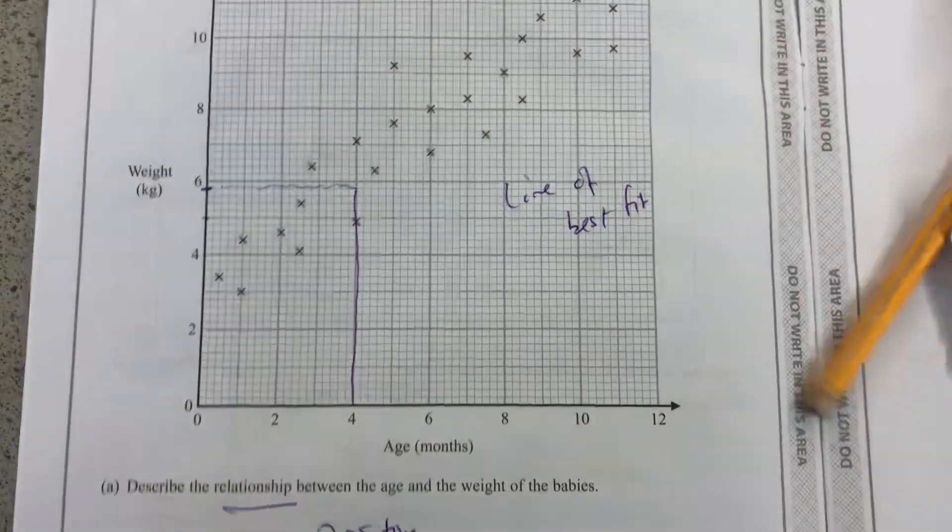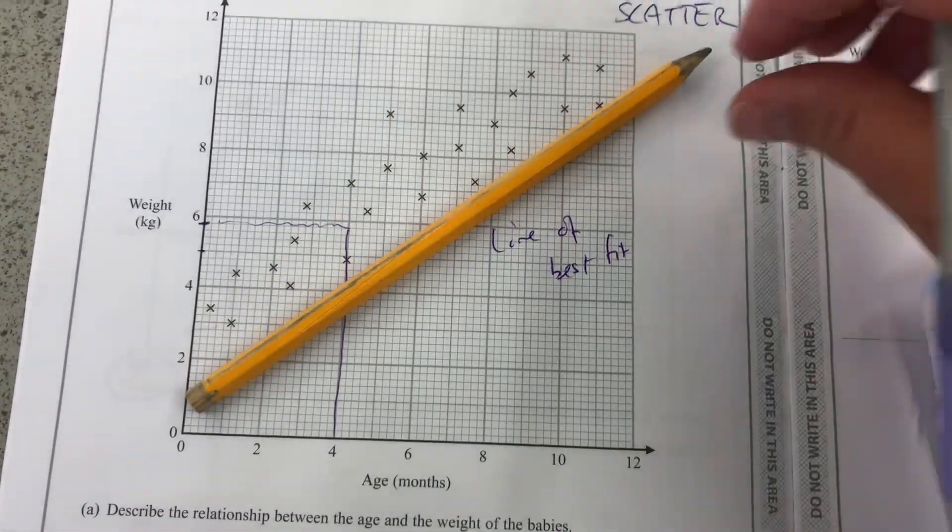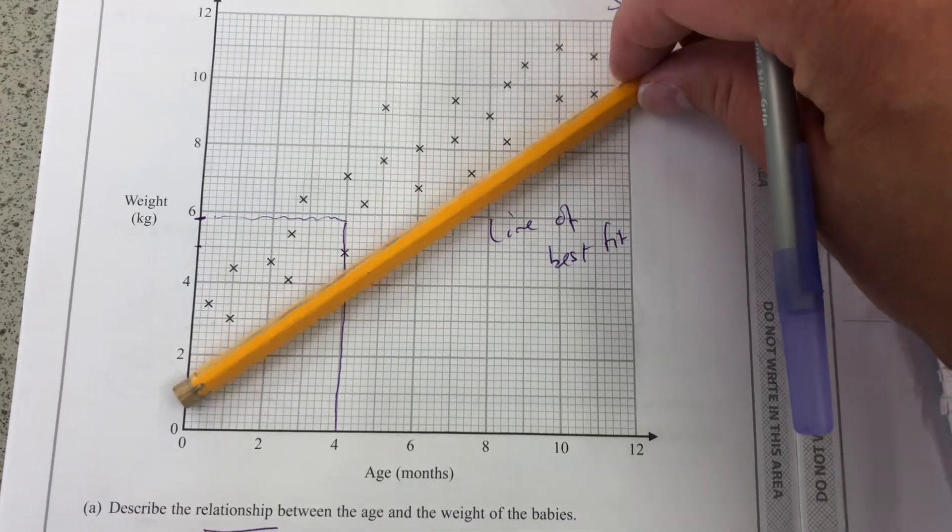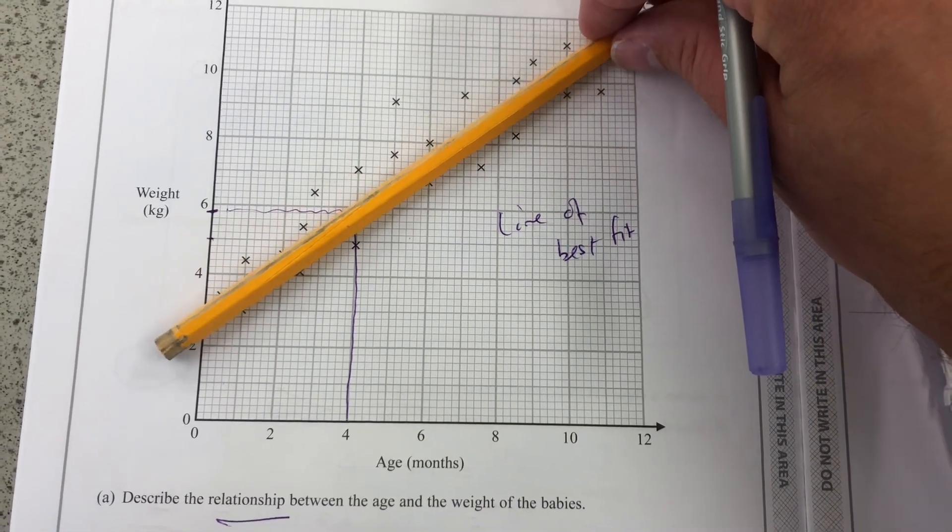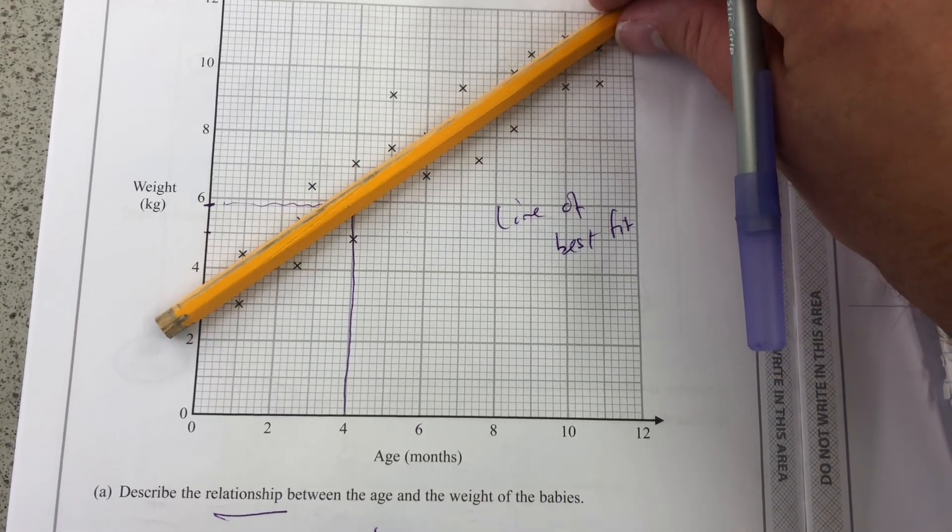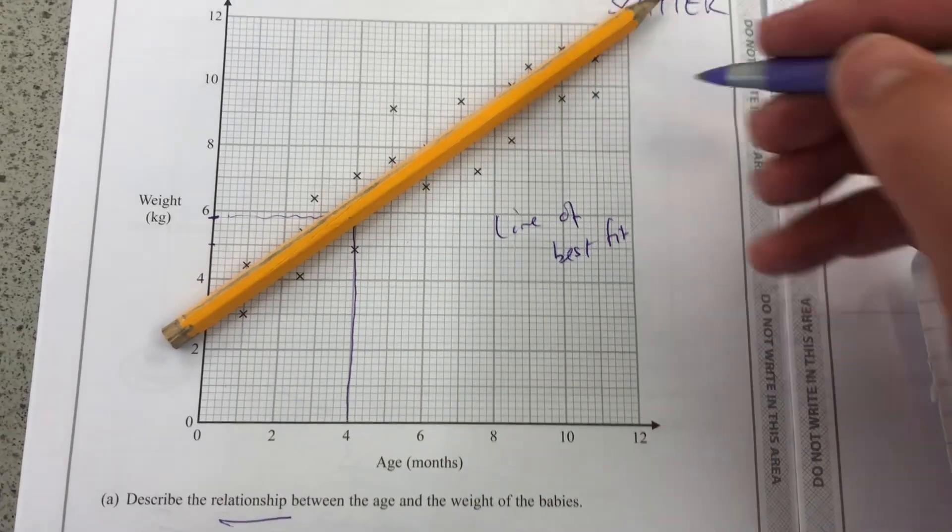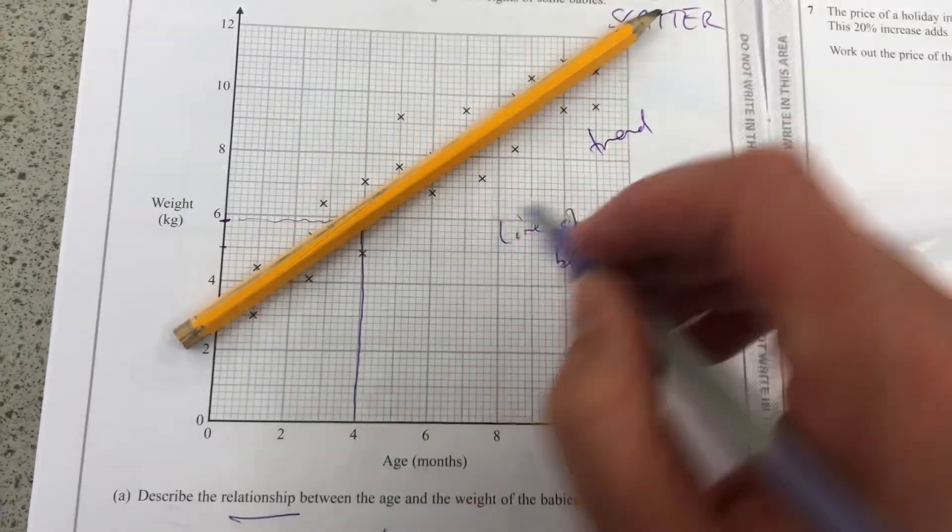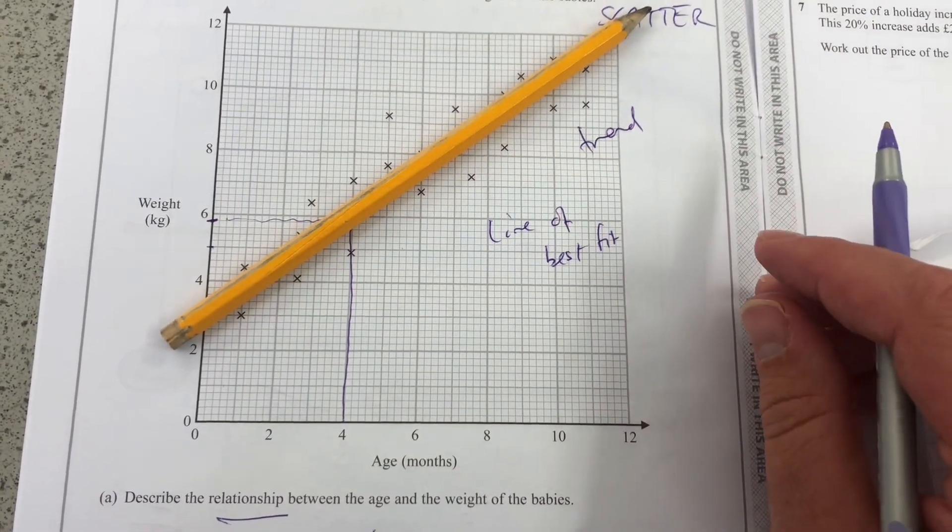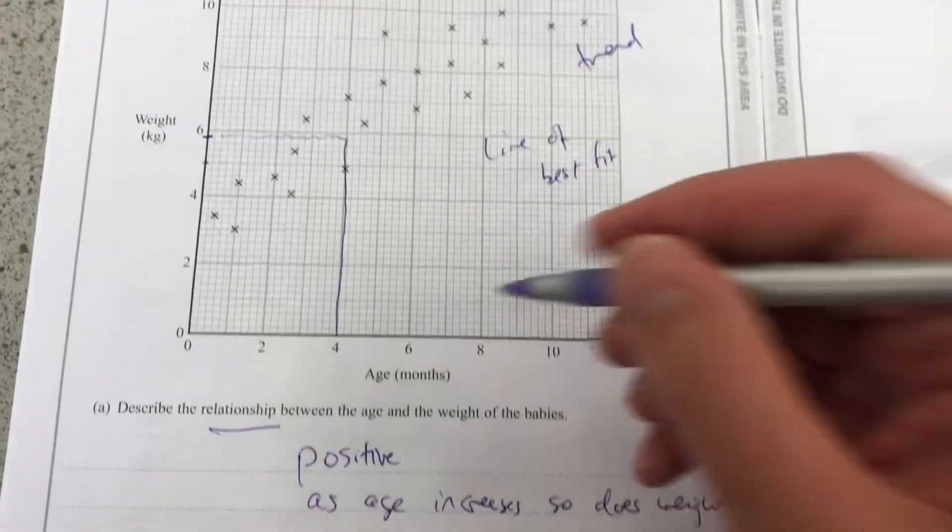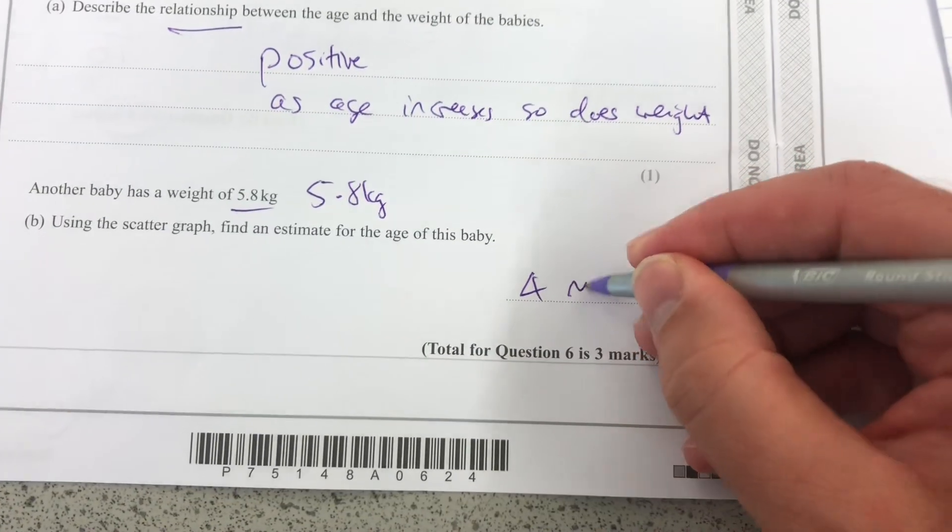Now, your line of best fit might be slightly out. I haven't quite used regression or other statistical methods to get the exact line, but something that has the right trend and roughly the same number of points on either side. So I'm going to go with an age of 4 months.